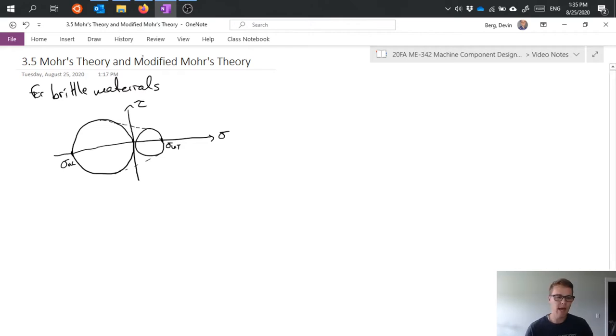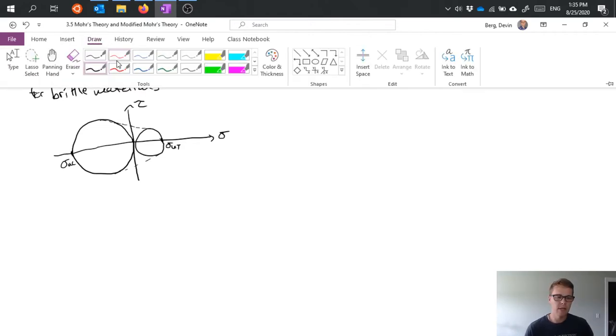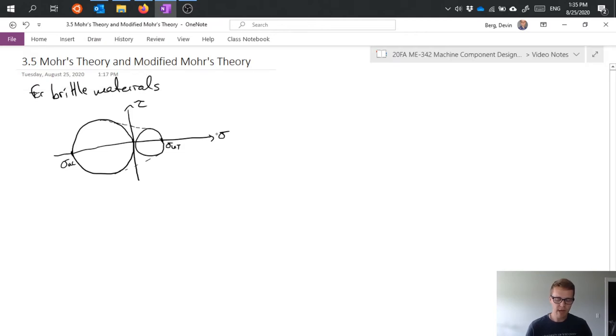However if we have available to us the ultimate torsional strength tau_u from a torsion test then that gives us a little bit more information. And if we did a pure torsion test then what we'd be finding is the ultimate torsion strength which is going to fall somewhere in here and we'd inscribe that circle around the origin like that.